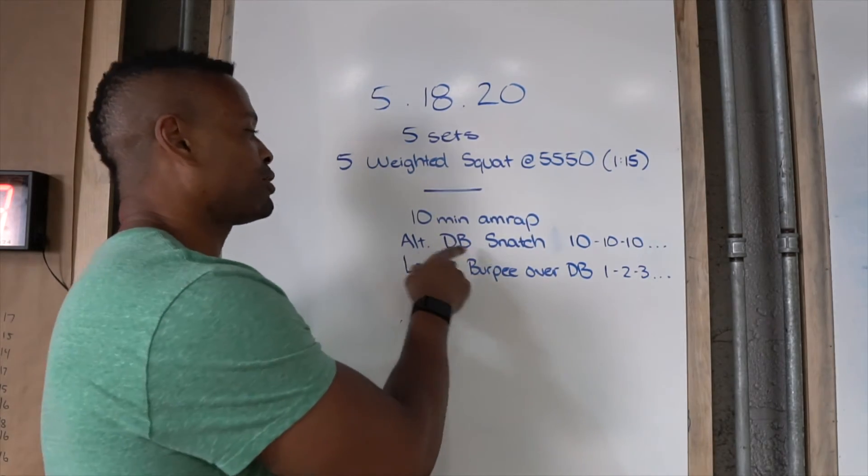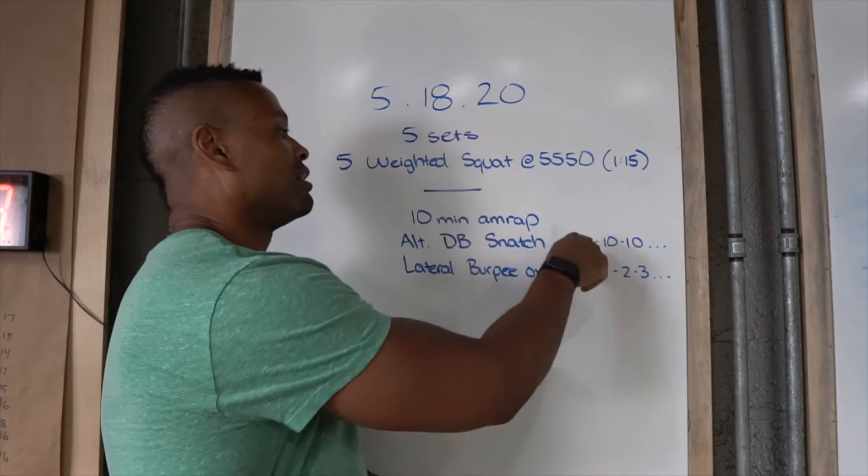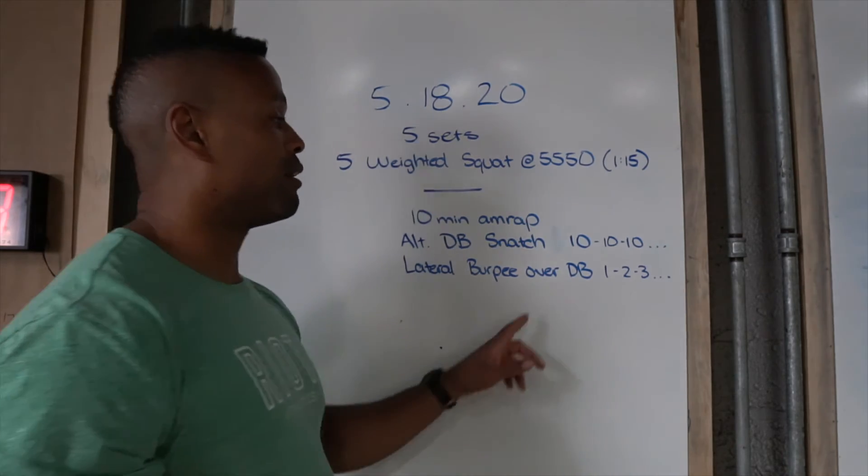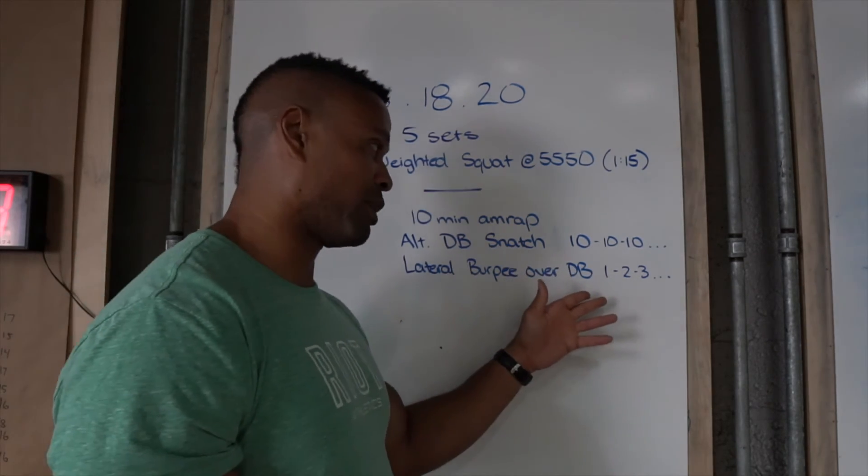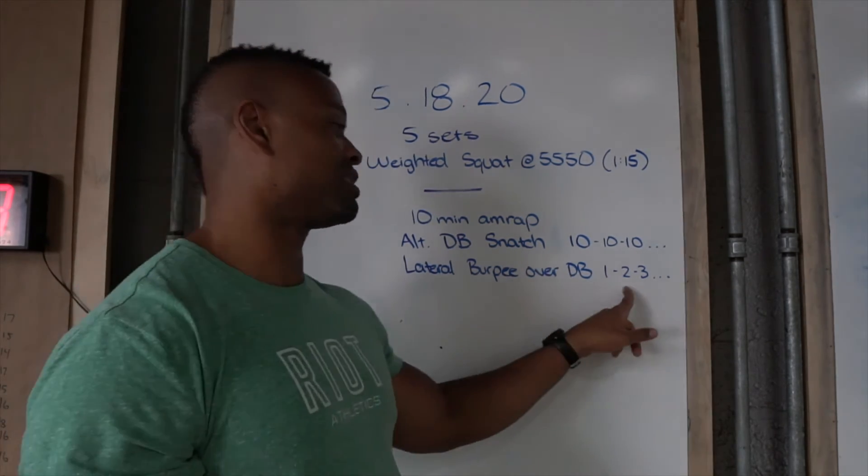So 10-minute AMRAP of alternating dumbbell snatch, or kettlebell, 10 of those, and then lateral burpee over the dumbbell, or kettlebell, whatever you're using, and this is gonna be an ascending ladder on these reps.